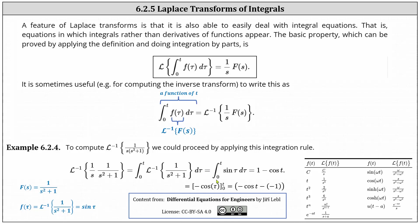This gives us the integral from zero to t of sine(τ) dτ. The antiderivative of sine(τ) is negative cosine(τ), and evaluating F(t) minus F(0) gives negative cos(t) minus negative one, which yields an inverse Laplace transform of 1 minus cos(t).